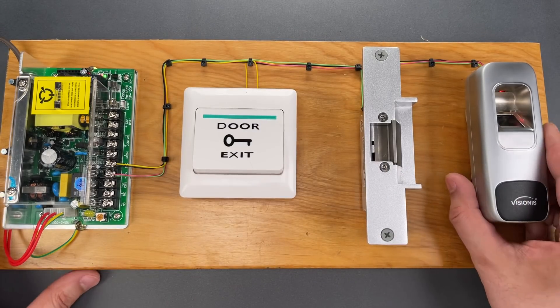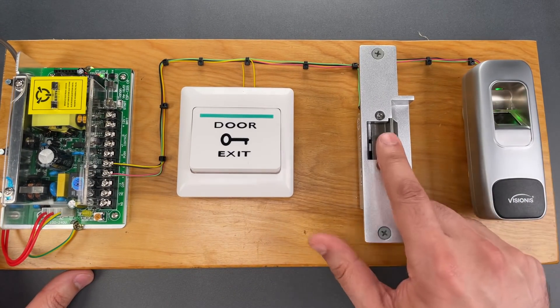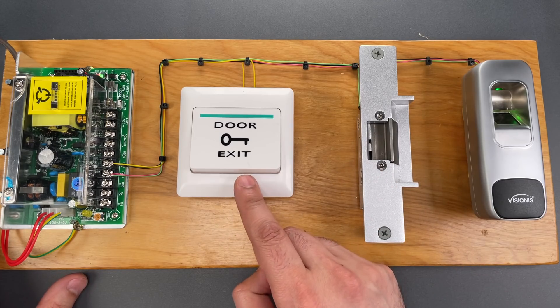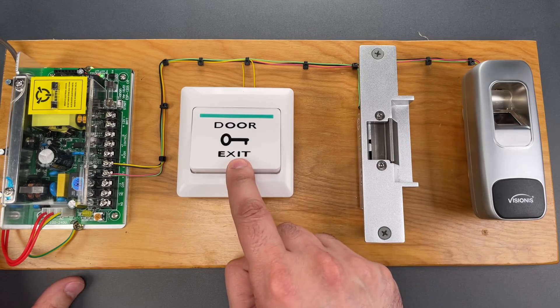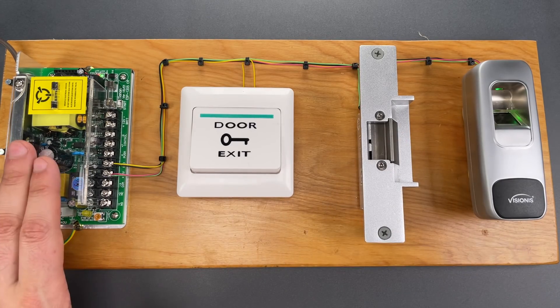We have the reader itself that allows us to open the electronic strike. Then on the inside of the door, we have a push to exit button that allows us to actuate the strike from the inside of the door. And finally, we have the power supply.